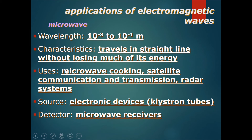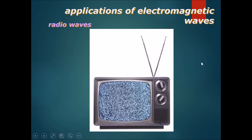Uses of microwaves are microwave cooking, communication and transmission, and radar systems. Microwaves are actually used for communicating from the earth to the moon. Sources of microwaves are electronic devices like klystron tubes; detectors are microwave receivers.